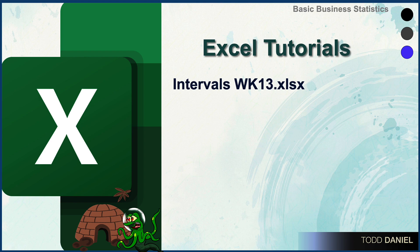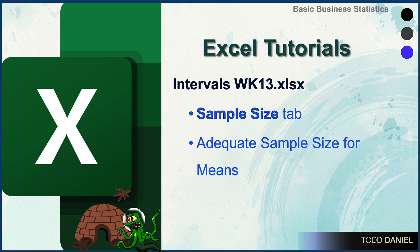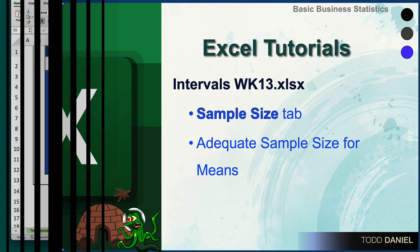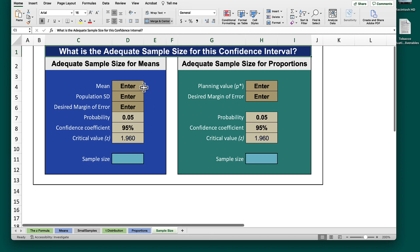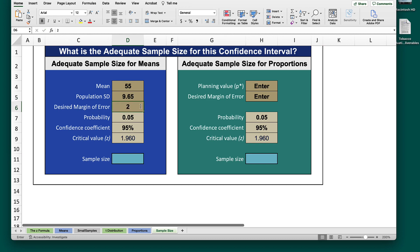Let's go to our Intervals Week 13 Excel spreadsheet and look at the Sample Size tab. We will be using the box labeled Adequate Sample Size for Means, and we can begin by entering the data that we know: the mean is 55, the population standard deviation is 9.65, and the desired margin of error is 2. By default, our probability is set to .05, but that number can be adjusted and it will change the confidence coefficient. In this example, the desired sample size is 89.4, which we will round up. The sample size needs to be at least 90 orders in order to satisfy the proprietor's 2 credit margin of error requirement.